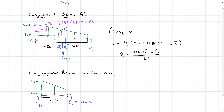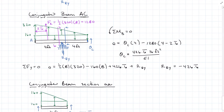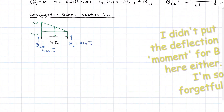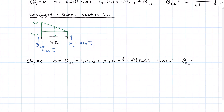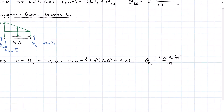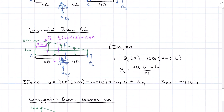Coming back, I take section BB just to the left of reaction BY. Solving for the BY conjugate reaction — the fake roller placeholder for the two different slopes at the hinge — gives negative 426.6. Adding that to conjugate beam section BB, just to the left of the roller, I get theta B-left equal to positive 320 pound-feet squared over EI. Positive means theta B-left is actually sloped counterclockwise, so I corrected my elastic curve sketch accordingly.